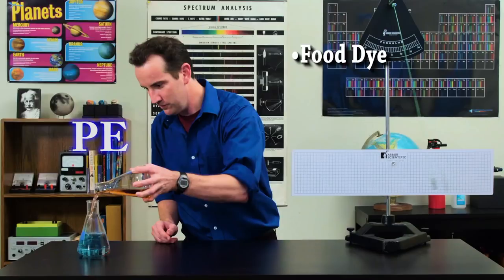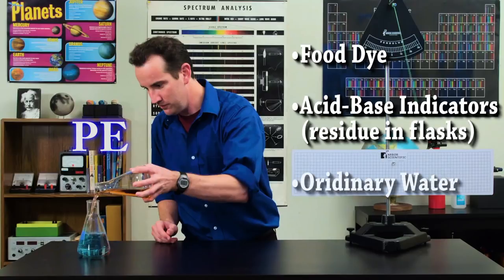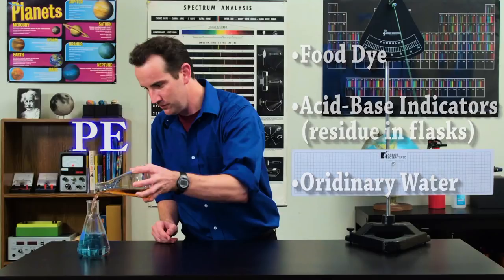Now this demonstration was done with food dye, but another way to do it is with acid base indicators, or just plain ordinary water. The point is, the total amount of water is always a constant value.